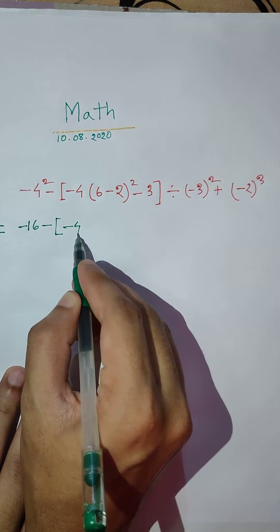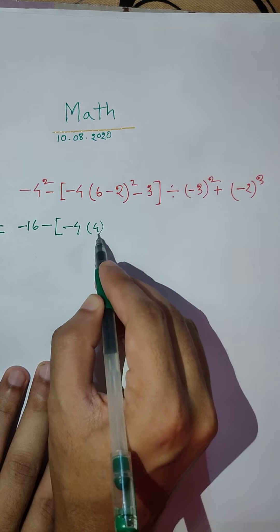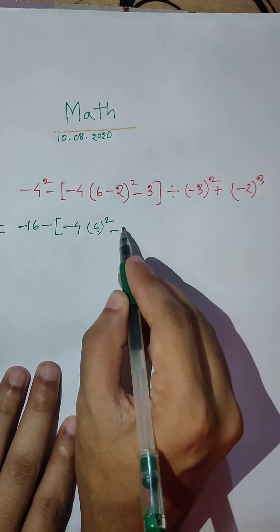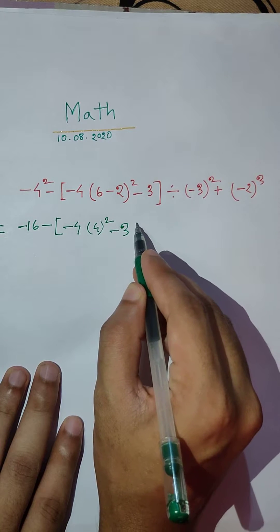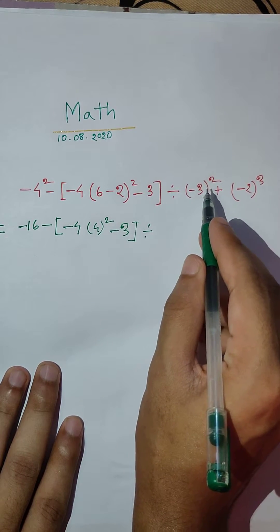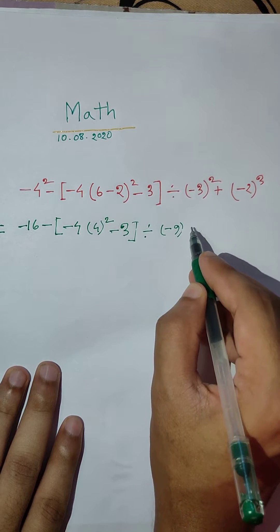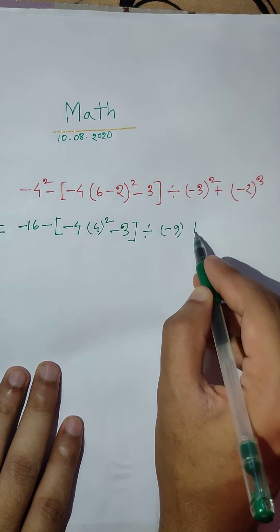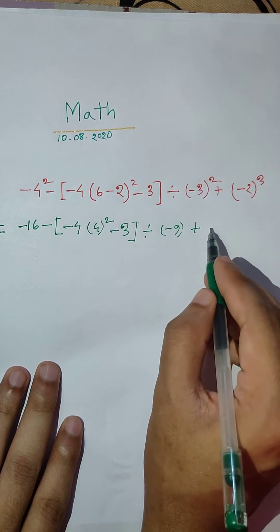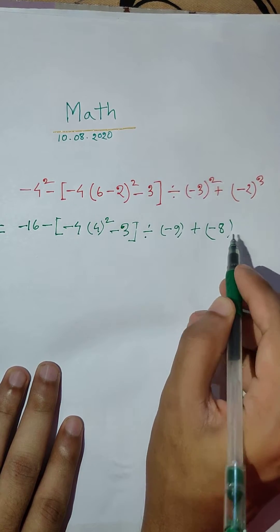Minus 4, bracket. 6 minus 2, then 4 squared. Minus 3, then divide. 3 into 3 is minus 9, plus 2 into 2 is 4. 4 into 2 equals minus 8.